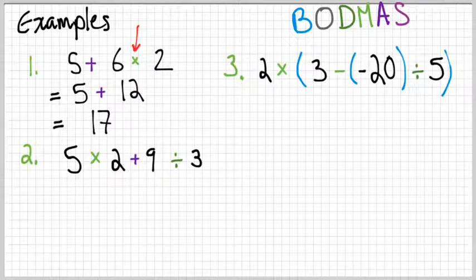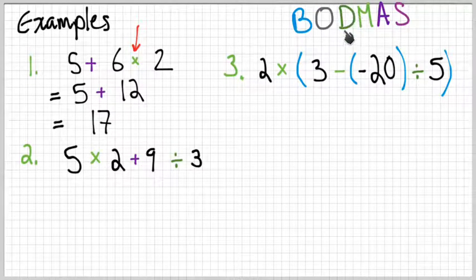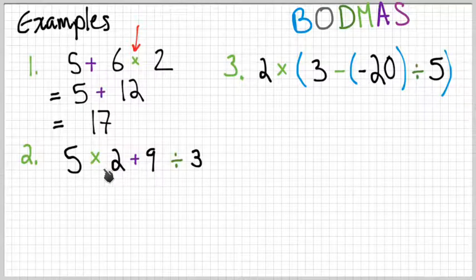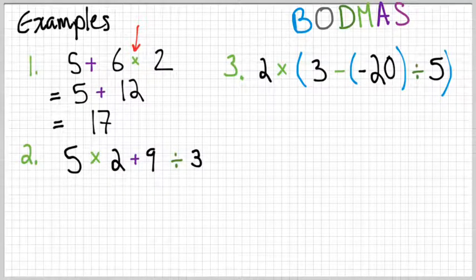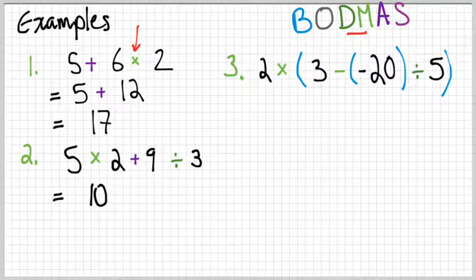Example two. We have 5 × a + 9 ÷ 3. Here we have multiplication and division. We also have addition. So what comes first? Well, division or multiplication. It's whichever. And we're going to go left to right, start at the beginning. Whichever of those two comes first, and it's multiplication. So we're going to do 5 × 2. And that's 10.